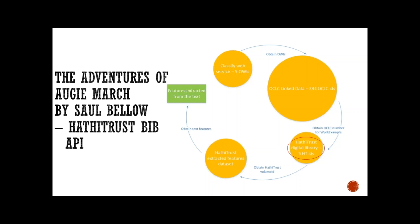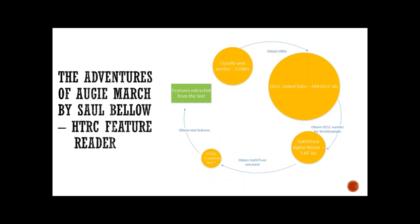For manifestations that meet additional metadata criteria, HathiTrust volume IDs for each available digital file copy could be extracted. In this example, five HathiTrust volume IDs are found. The HathiTrust feature reader's command line utility or Python functions may be used to find extracted features data sets, if available, for each particular HathiTrust volume ID. In this example, two volumes of extracted feature data set were found.